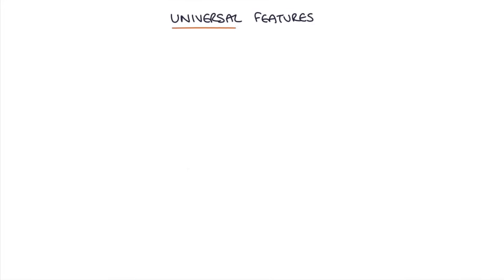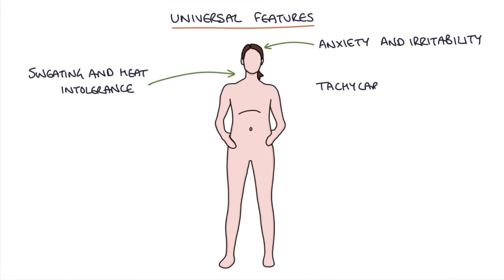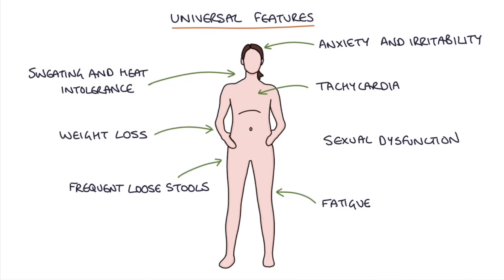The universal features of hyperthyroidism — that is, having a high thyroid hormone level in the body — include anxiety and irritability, sweating and heat intolerance, tachycardia or fast heart rate, weight loss, and fatigue. Even though they have a high thyroid hormone level, patients will feel exhausted all the time. Thyroid hormone also stimulates the bowel, so you get frequent loose stools, and patients can have sexual dysfunction as well.